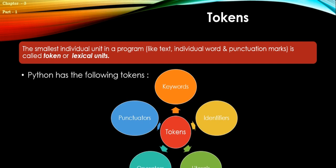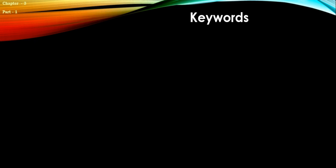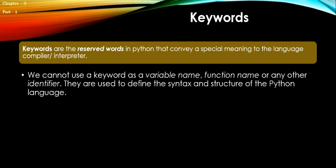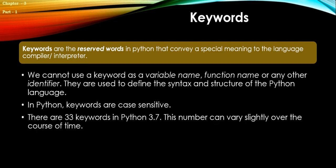Now we'll begin one by one. Let's start with keywords. Keywords are the reserved words in Python that convey a special meaning to the language compiler or interpreter. We cannot use a keyword as a variable name, function name, or any other identifier. They are used to define the syntax and structure of the Python language.